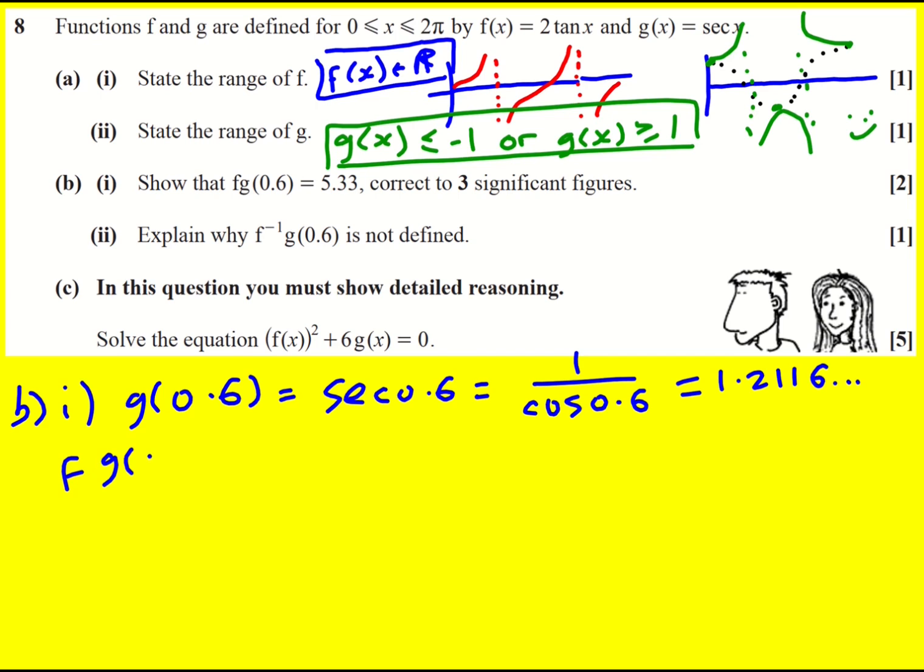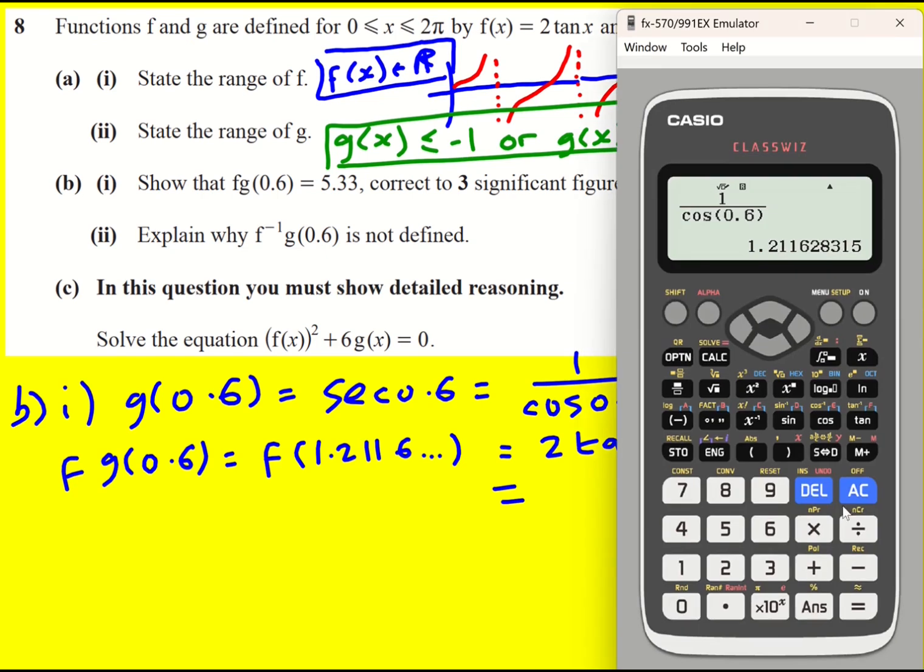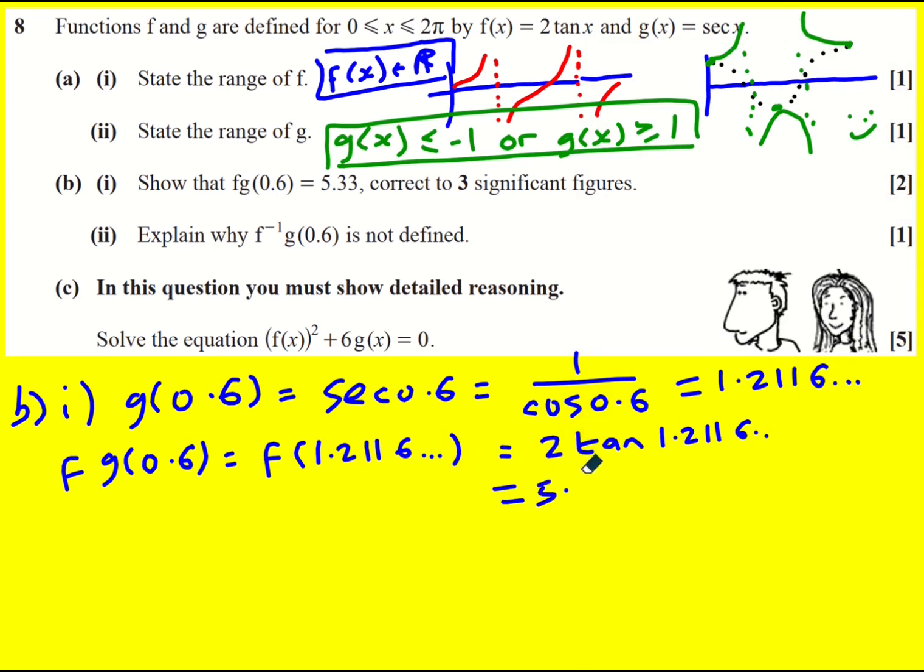So f(g(0.6)) is going to be f(1.2116), which is going to be 2tan(1.2116). I think I'm showing quite a lot of work in here, but it is a two mark question. Probably one mark for that bit there. I haven't actually checked. All right, so now I can do tan just of the answer and I'll get the exact amount and I can times by 2. And we get 5.326. Which I would write down a bit extra and then we're going to round it.